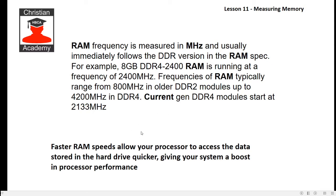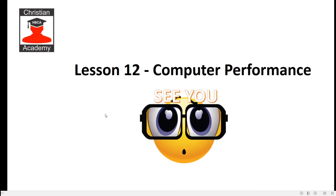Faster RAM speeds allow your processor to access data stored on the hard drive quicker, giving your system a boost in processor performance. A lot of times you can't see that with the naked eye, but it is measurable with software. That concludes this lesson. In the next lesson we're going to get into performance issues, so if you've got a slow computer and you're frustrated with it, definitely tune in for Lesson 12 — Computer Performance. I'll see you in Lesson 12.